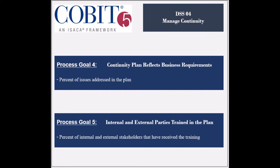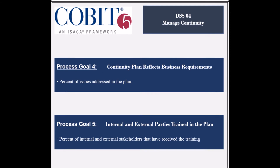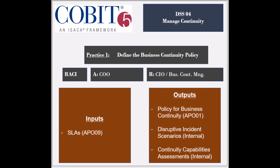The fifth goal is to ensure that internal and external parties have been trained in the continuity plan, and its achievement is measured by the percent of stakeholders that have received the training. The process has eight practices, and the first practice is to define the business continuity policy and objectives. The entities responsible for this practice include the business process owners, the chief information officer, and the business continuity manager.